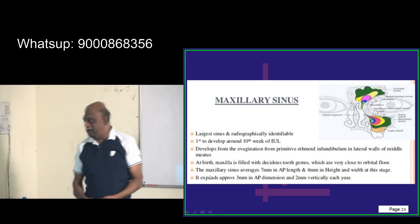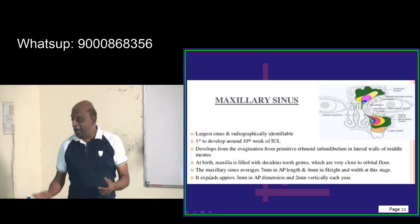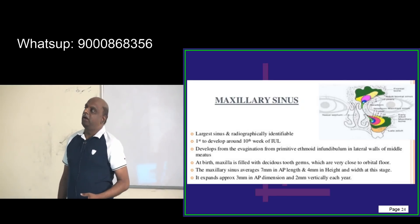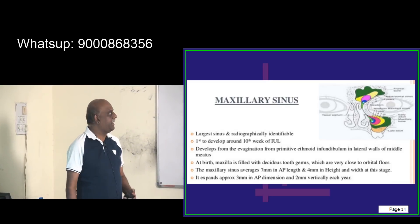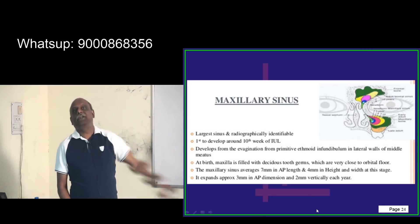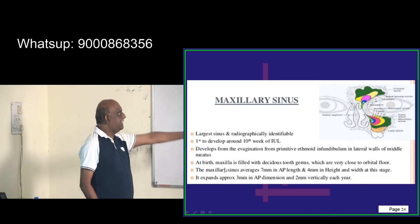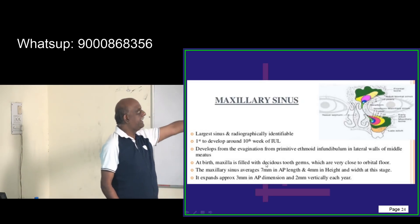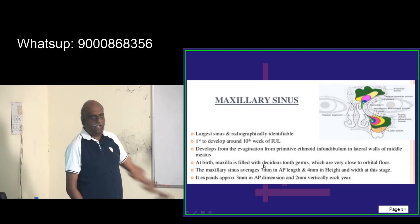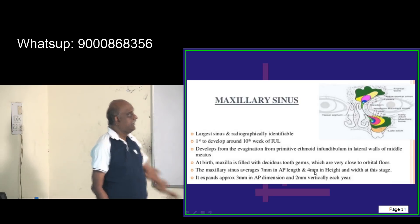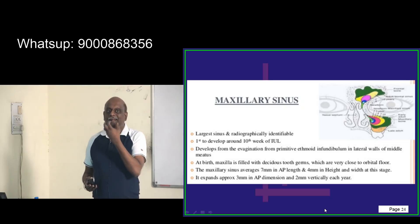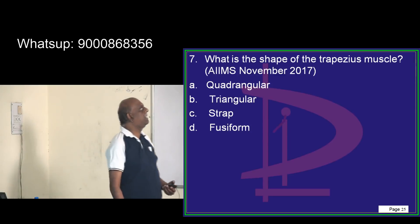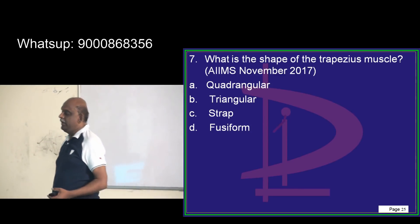The maxillary sinus is the first paranasal sinus to develop in intrauterine life, beginning at the 10th week of intrauterine life. At birth, the maxillary sinus is initially filled with deciduous tooth gums, and the teeth and maxillary sinus have a very close anatomical relationship — this is what you need to fundamentally remember.